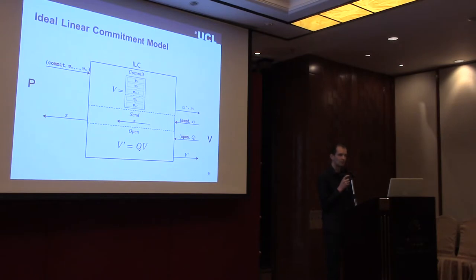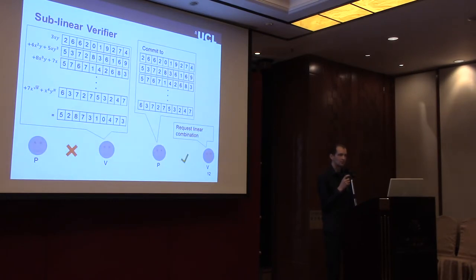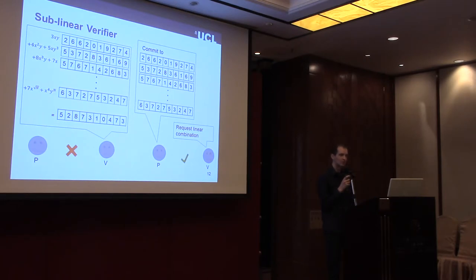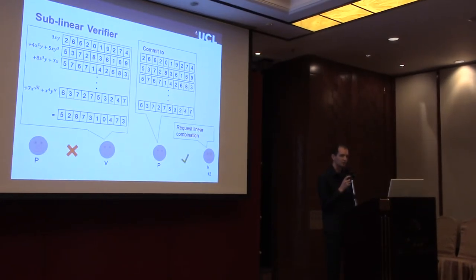In the Ideal Linear Commitment model, we provide the prover and verifier with an additional functionality — the ILC — which allows the prover to commit to row vectors and the verifier to query linear combinations of these row vectors in a trusted manner. There are parts of the protocol, for example computations with the public permutation matrix, where the verifier would have to compute very complicated expressions in publicly known values, which would lead to linear or even super-linear computational costs. Instead, we outsource as much work as possible to the prover: we ask the prover to commit to various public matrices, and the verifier simply requests linear combinations of the rows of these matrices rather than computing them directly — leading to sublinear verification times.